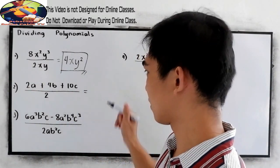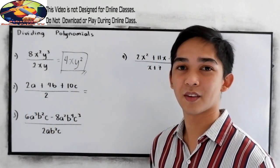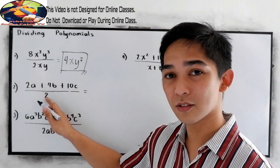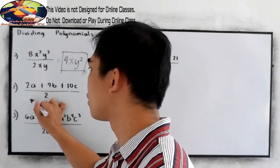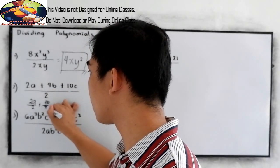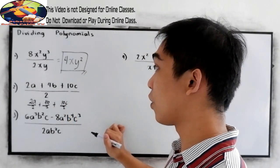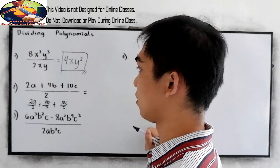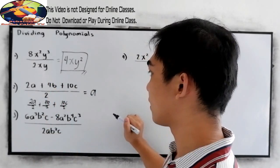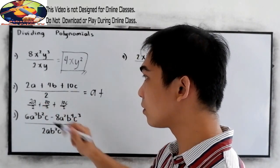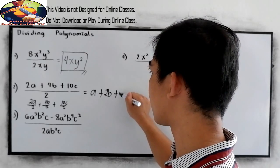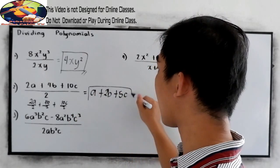For number 2: 2a plus 4b plus 10c all over 2. We're going to expand this — we can write that expression as 2a over 2, plus 4b over 2, plus 10c over 2. So 2 divided by 2 is 1, giving us 1a or simply a. Plus 4 divided by 2 is 2, so we have 2b. And 10 divided by 2 is 5, so 5c. This will be our final answer.